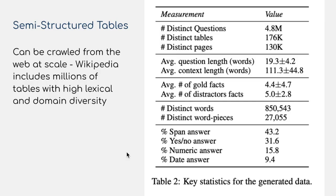These tables can be crawled from the web at scale. Wikipedia includes millions of tables with high lexical and domain diversity — from endemic birds of Japan to NFL Super Bowl winners. In this study, they use 176,000 distinct tables, from which they construct nearly 5 million distinct questions for training data. This is a massive amount, rivaling most language modeling datasets outside the very largest ones like C4, and is almost certainly larger than all existing supervised learning datasets for these reasoning tasks.